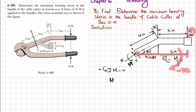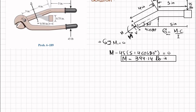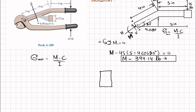The moment due to the 45-pound load is clockwise, so it is negative: minus 45 times (5 plus 4 cos 20°) equals zero. Solving this, M equals 394.14 pound-inches. The cross-sectional area is rectangular with height 0.75 inches and width 0.50 inches.